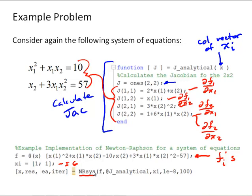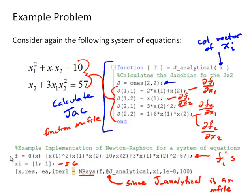One note here, since this Jacobian is a function m file, that's why you'll see a little at right here. That's since j_analytical is an m file, and as opposed to f, right, recall that's called an anonymous function. So, that's why there's no at for the f. That's how we, what we've typically been doing in the class so far.